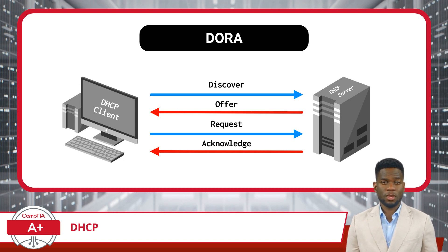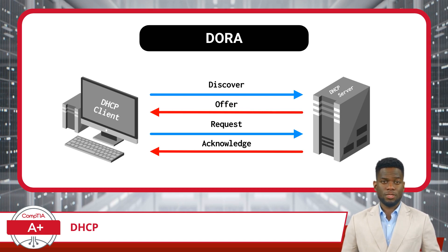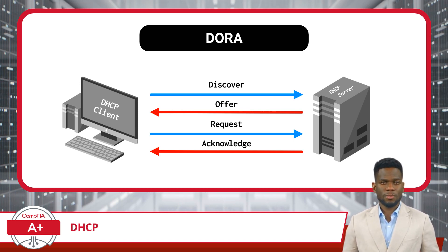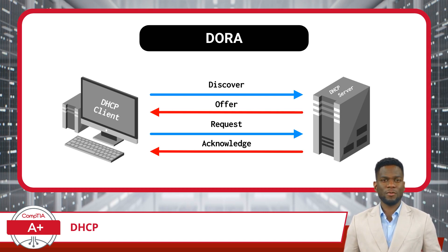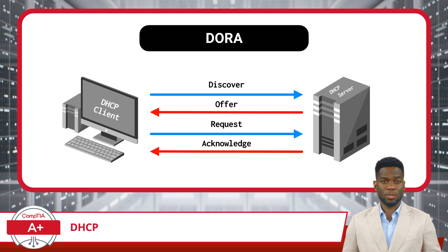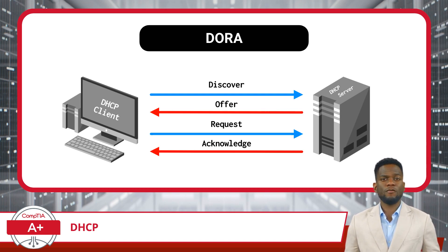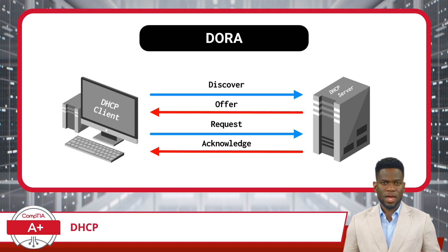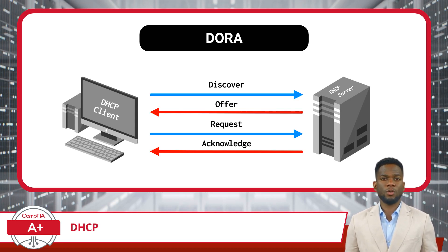Upon hearing this call, a DHCP server on the network springs into action, entering the Offer phase. The server selects an available IP address from its pool of addresses and sends an offer message back to the device. This message essentially says, 'Hello, device. I am the DHCP server, and I propose this specific IP address for you to use.'